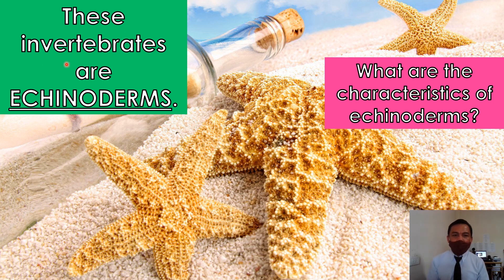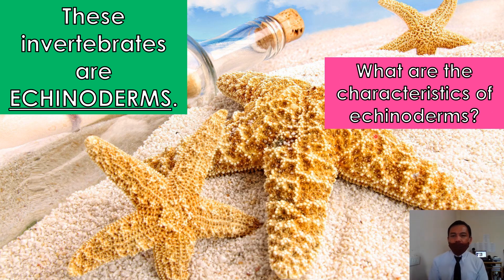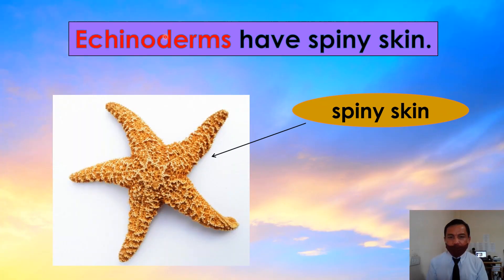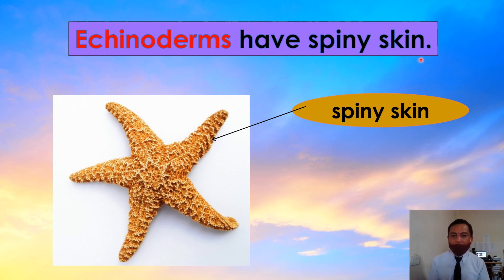These invertebrates are echinoderms. What are the characteristics of echinoderms? Echinoderms have spiny skin. Look at the picture — the skin is spiny.